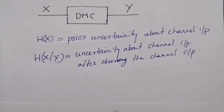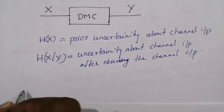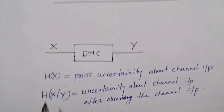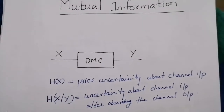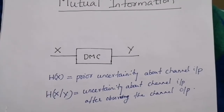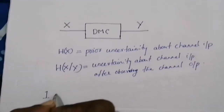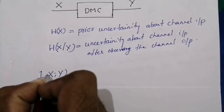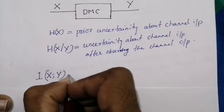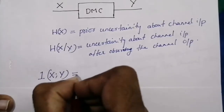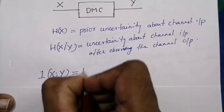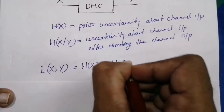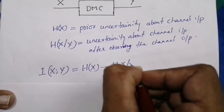Mutual information is defined as the difference between h(x) and h(x|y). That is, mutual information is designated as I(x;y), equal to h(x) minus h(x|y).